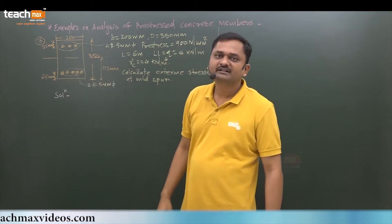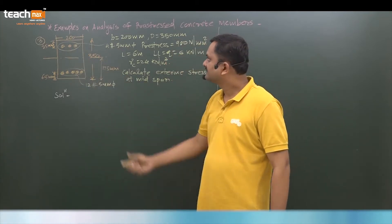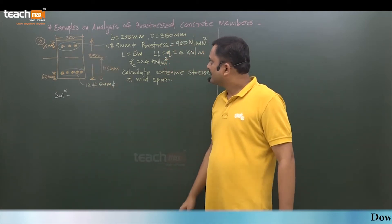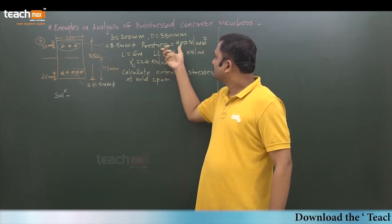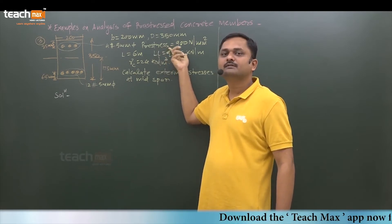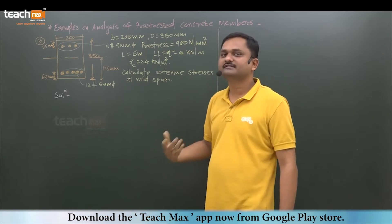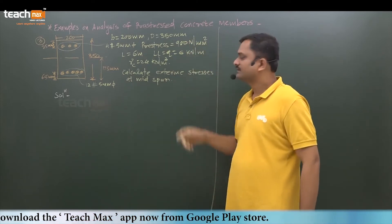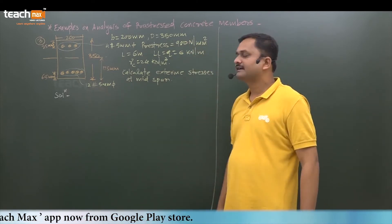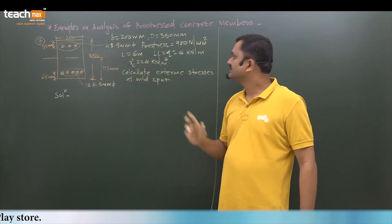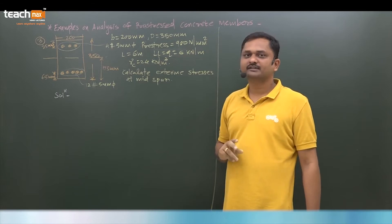Four wires of 5mm diameter are provided at 25mm from top. The size of cross section is 200 by 350mm, and the total pre-stress developed by these 16 wires is 900 Newton per mm square. Span of the beam is 6 meters, subjected to live load 6 kilonewton per meter.